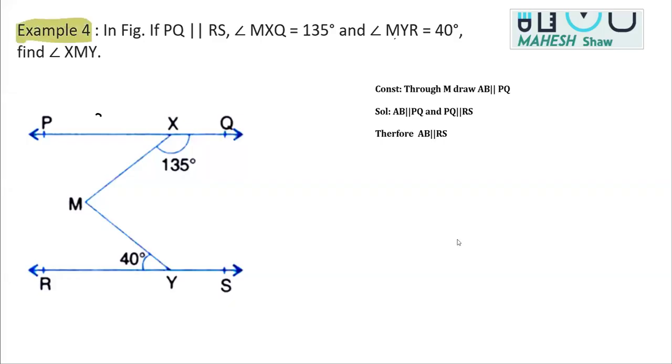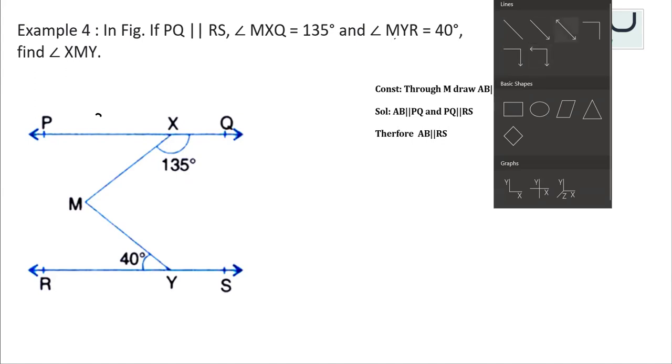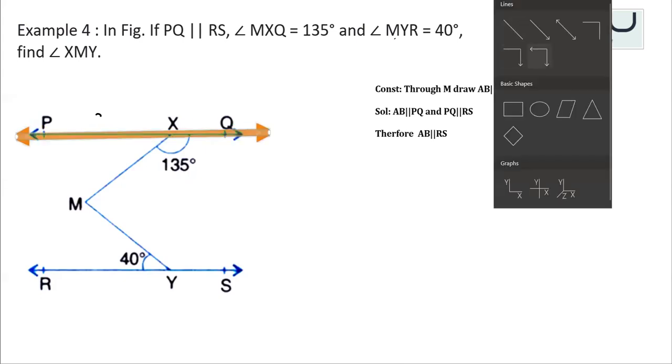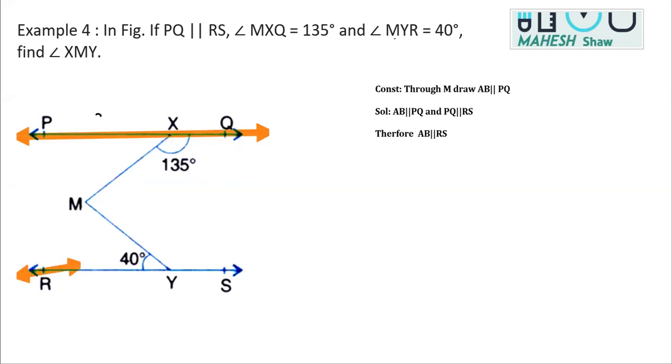I'm going to do example number 4 from the chapter Lines and Angles. As you can see, a figure is given. In this figure, we can see two lines are drawn and these two lines are parallel. One is PQ and the other is RS. PQ line is drawn parallel to RS. You can see in the figure these two lines are drawn parallel here.